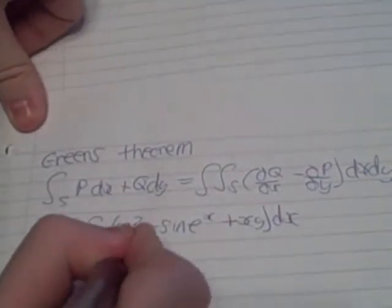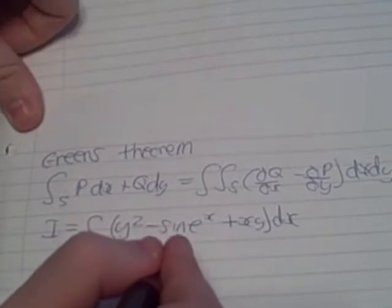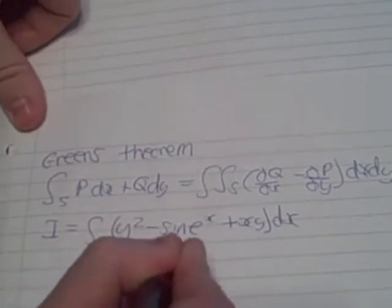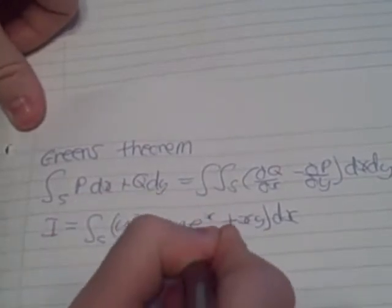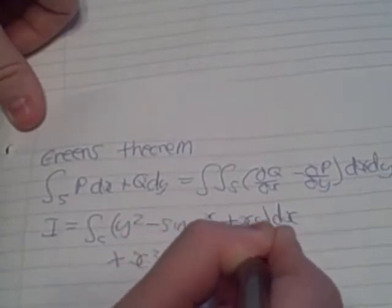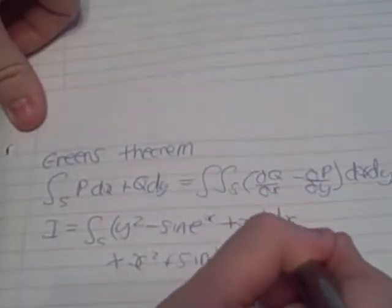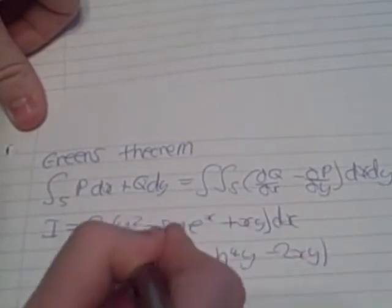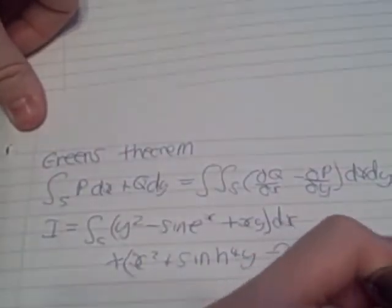And then we have to have our dy part, which is going to be our q of x squared plus shine 4y minus 2xy. And that can be our dy part.